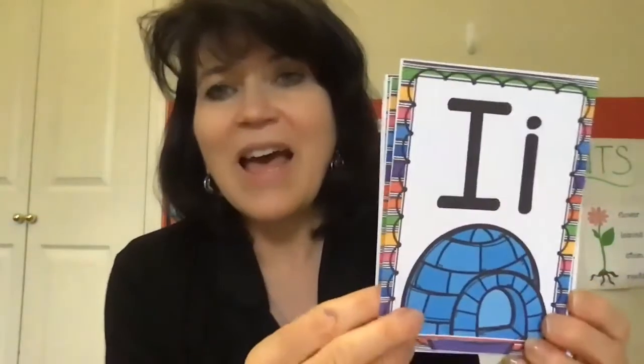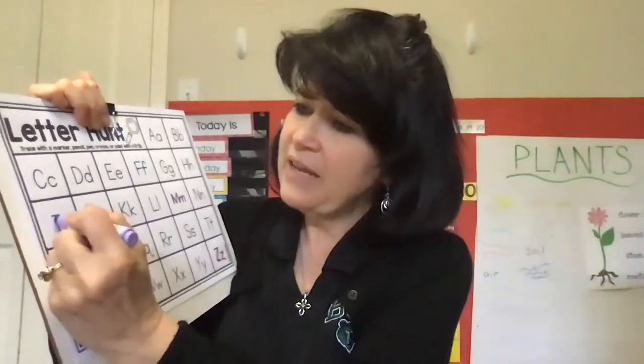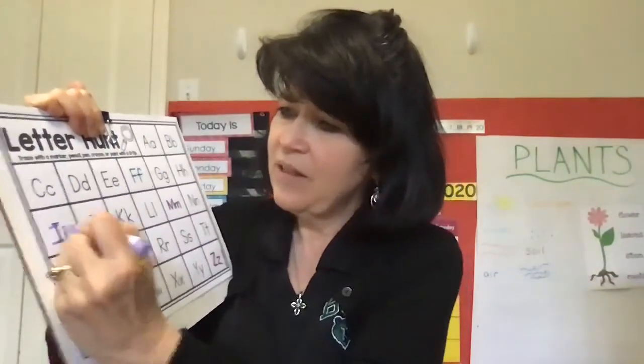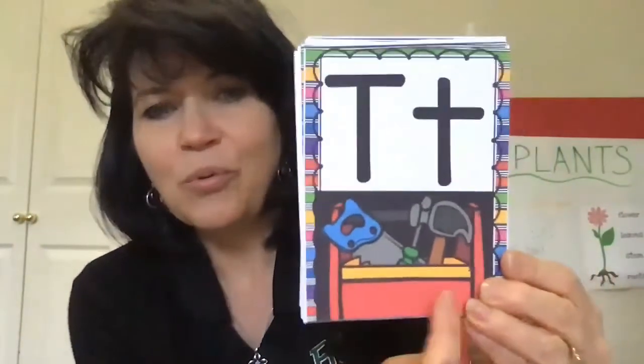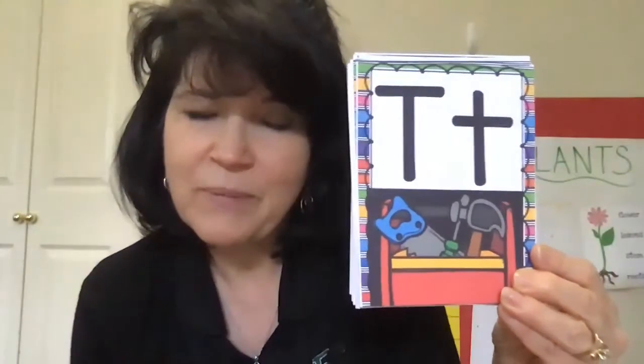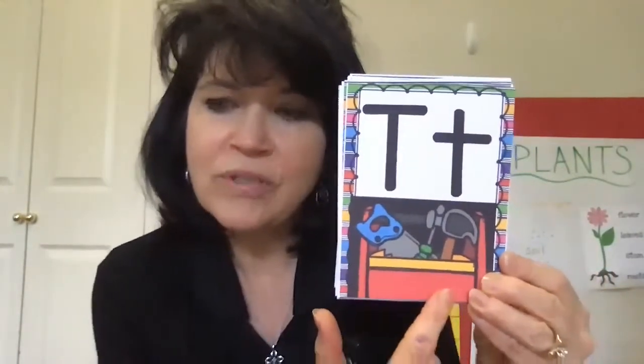Now if I'm going too quick, just hit pause. This is the letter I. I says 'i' as in igloo. Now find your I and mark it — uppercase and lowercase. Good job. Next letter — this is the letter T. T says 't' as in tools. That was like our tools before. Find your T and mark it on your chart.